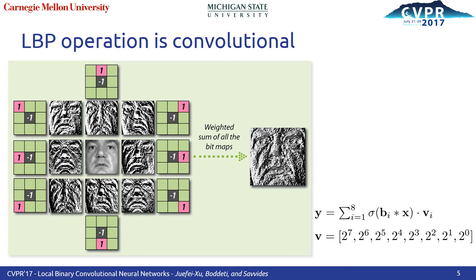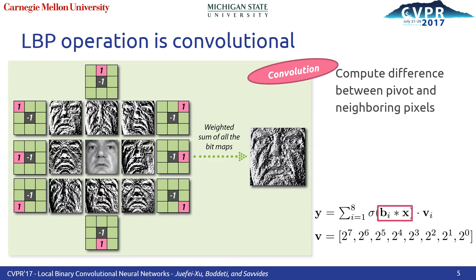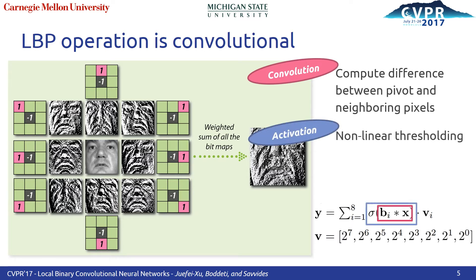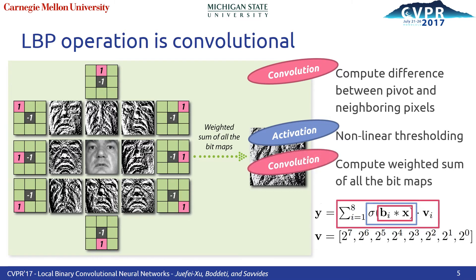LBP operation is naturally convolutional. Step one is to compute the difference between the pivot and the neighboring pixels, which is convolution with binary filters. Step two, the bitmap thresholding is equivalent to a nonlinear activation. Step three, the weighted sum of the bitmaps can also be considered as a convolutional operation.